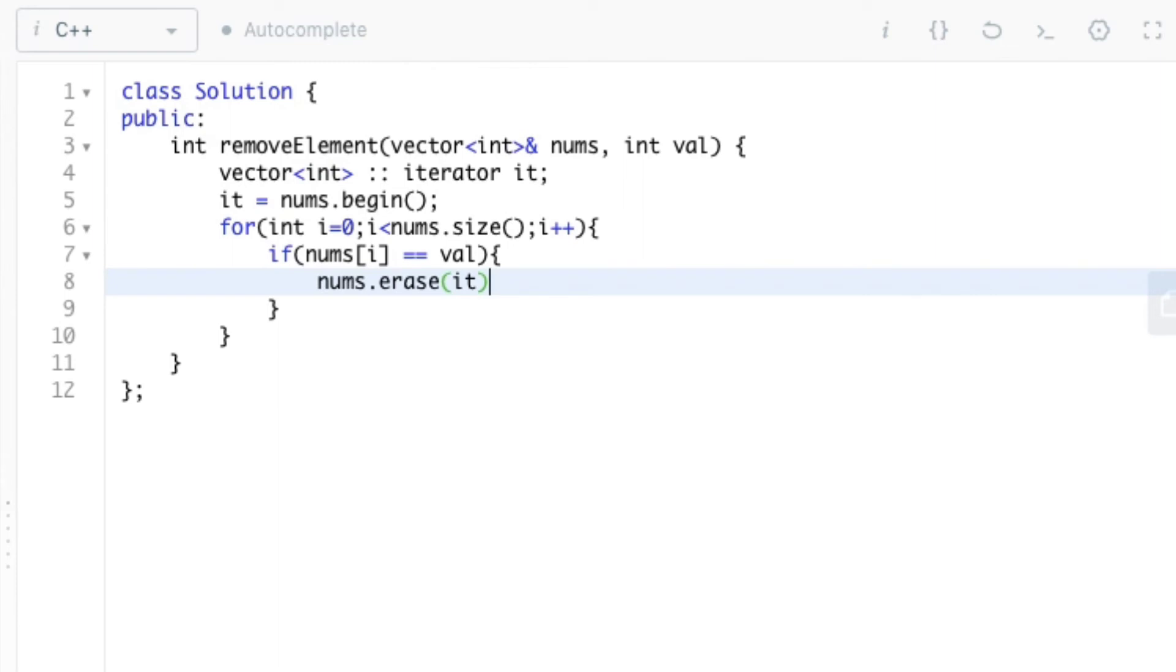Here we are using the erase function from STL library and passing it the iterator it to delete that particular value from the nums array. And we decrement it and i as well.